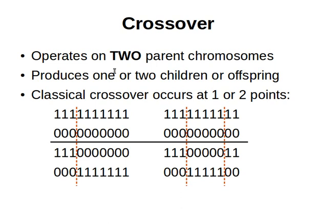Crossover operates on two parent chromosomes and produces one or two children as offspring. We can do one-point crossover, where we choose one point and exchange that portion of each chromosome, as you can see. Or we can do two-point crossover, where we choose two indices and exchange the contents between those two indices. The new chromosomes are different when compared against the parent ones.